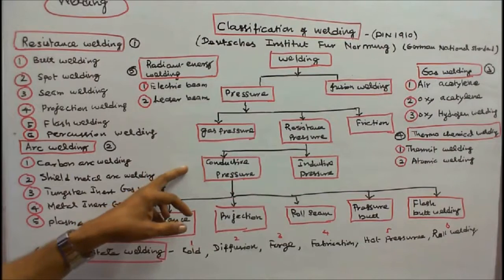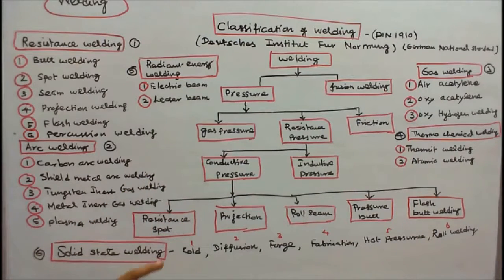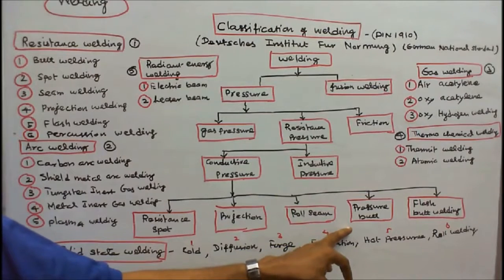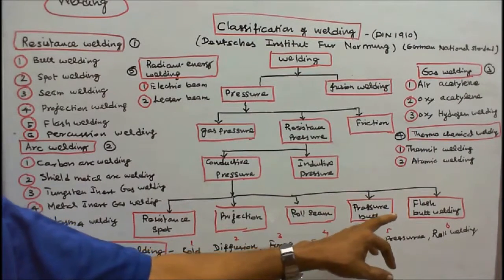Again, the conductive pressure welding has five types. One is resistance spot welding. Number two: projection welding. Number three: roll seam welding. Number four: pressure butt welding. Number five: flash butt welding.